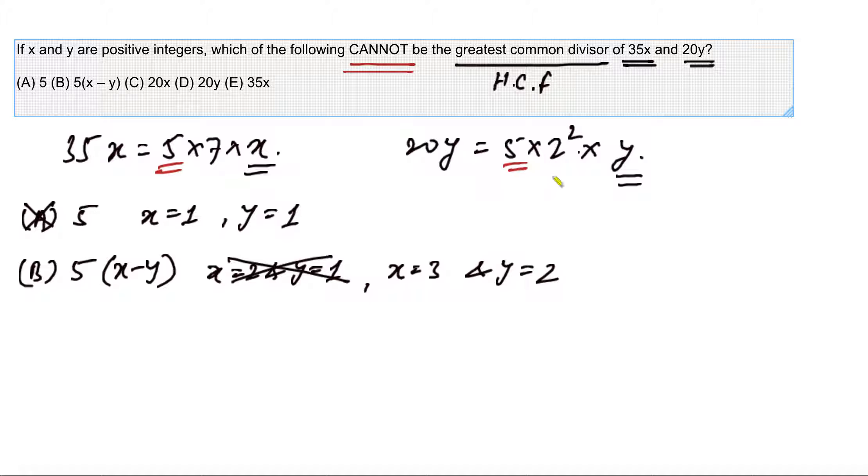Now you realize if you take x as 3, then we don't have prime number 3 on the other side in 20y, and y equal to 2 does not make any other prime factor similar between the two numbers except 5. So this set once again eliminates option B as well because B now becomes 5 for this set of values, and 5 may be the highest common factor if x is 3 and y is 2.